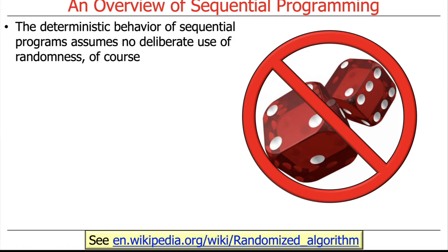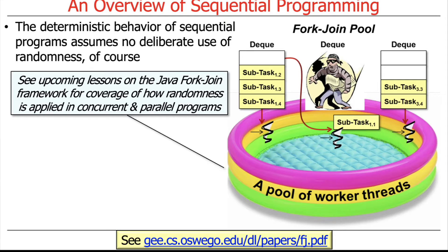If you start throwing in random number generators, then your program may behave randomly — but that's not the point. The point is that things occur in a certain order, assuming no deliberate use of randomness. We'll talk later in the course about how Java's fork-join framework uses randomness in concurrent and parallel programs deliberately, to reduce contention for shared resources. But sequential programs, for the most part, are deterministic.